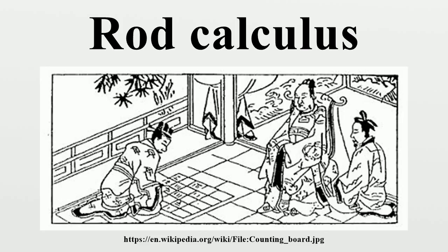When doing calculation, there was usually no grid on the surface. If rod numerals 2, 3, and 1 are placed consecutively in vertical form, there is a possibility of them being mistaken for 51 or 24. To avoid confusion, numbers in consecutive places are placed in alternating vertical and horizontal form, with the units place in vertical form.